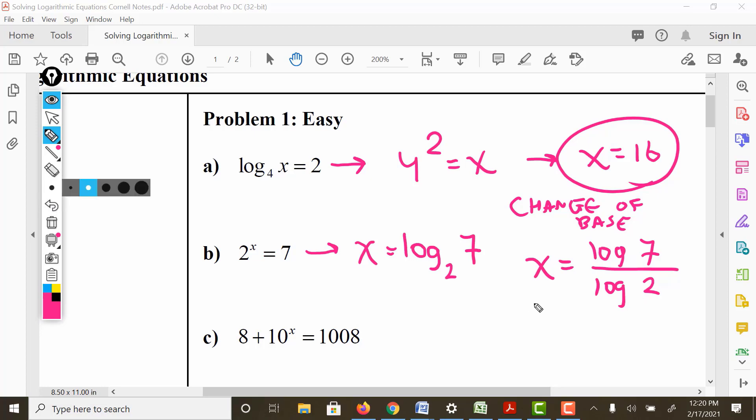If I were to put this in the calculator, I would put log 7 over log 2, and it comes out to be approximately about 2.8. I encourage you to check that out. Be comfortable with both - expressing this as a change of base and getting the decimal value.